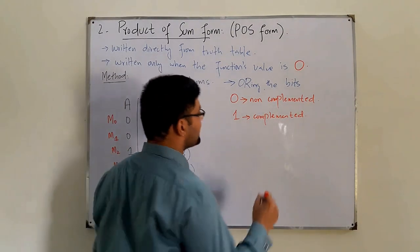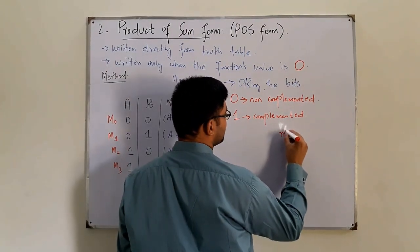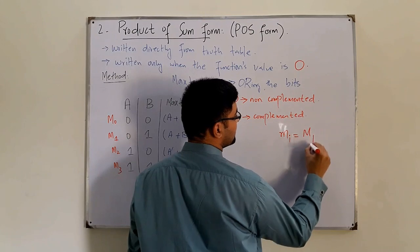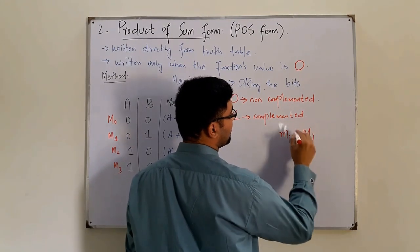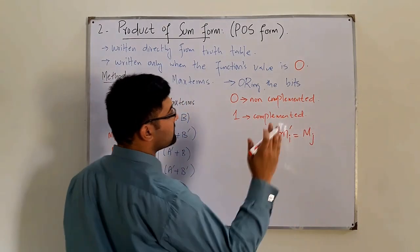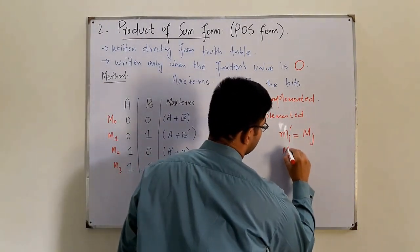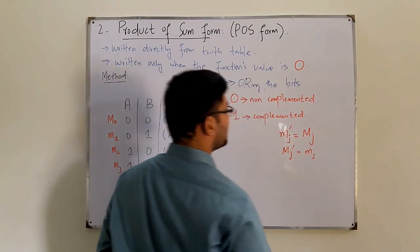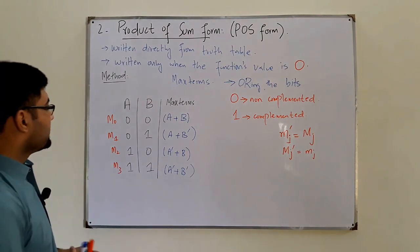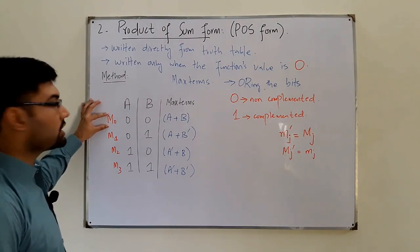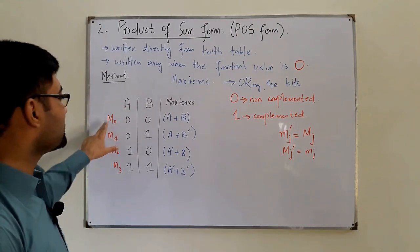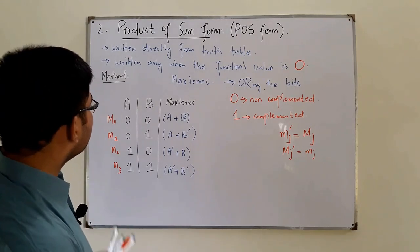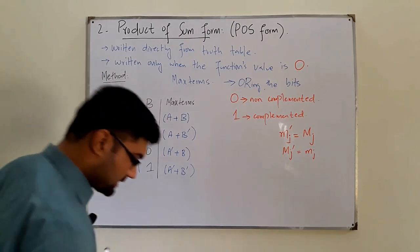One important property is that the min terms and the max terms are the complement of each other. That is, mi is the complement of Mj, or equivalently, mi complement equals Mj. So if you take the complement of a max term M0, it will give you the min term m0 of that function.